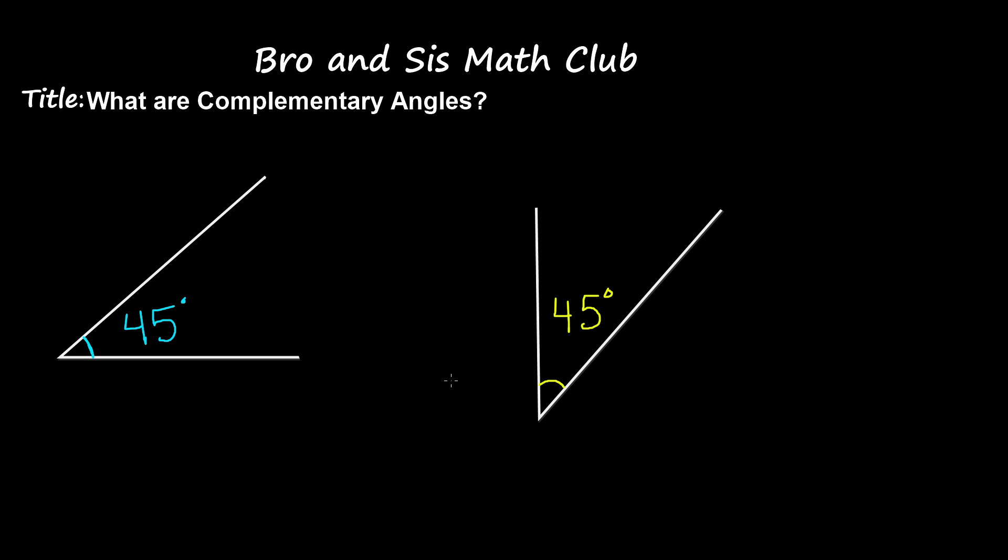Now these two are complementary angles. Why? Because when their measurements are added up, 45 plus 45, they add up to 90 degrees.